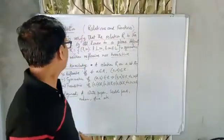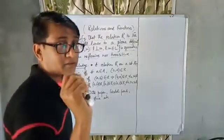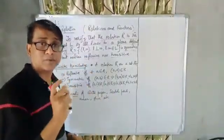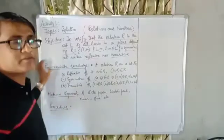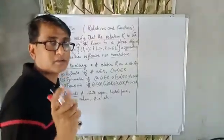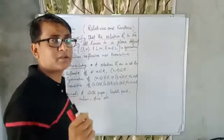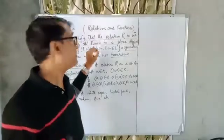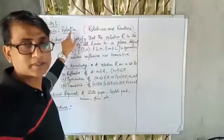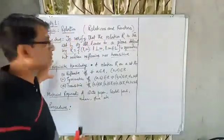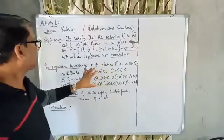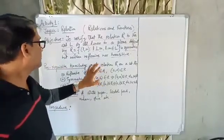For the activity, first you have to write the topic, then the objective — what we have to do. You also have to write what prerequisite knowledge we need. Since this activity is related to the topic of relations, we need knowledge of relations.